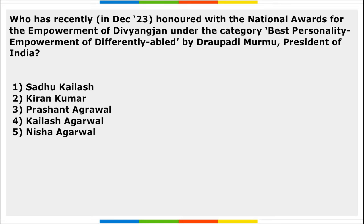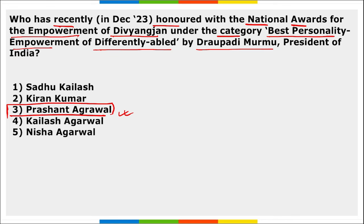Who has recently been honored with the National Award for the Empowerment of Divyangjan under the category best personality empowerment of differently abled by the President of India? Prashanth Agarwal was honored with this national award. He is the president of Narayan Seva Sansthan in Udaipur, Rajasthan.